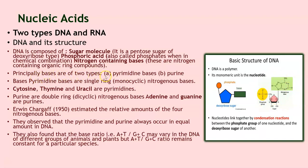Principally, bases are of two types: pyrimidine bases and purine bases. Pyrimidines are single-ring, monocyclic nitrogenous bases — examples are cytosine, thymine, and uracil. Purines are double-ring, dicyclic nitrogenous bases — adenine and guanine are purines.